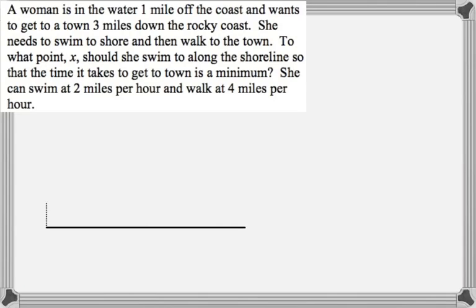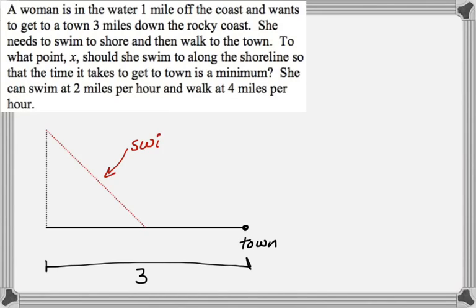The first thing we probably want is a picture. So it looks like this. There's your town, and we know that this distance is 3. She's going to swim that distance, and she's one mile off the coast. So this is what I have for a picture so far.